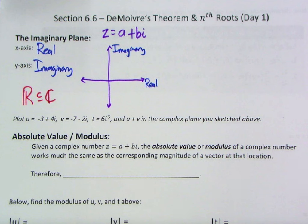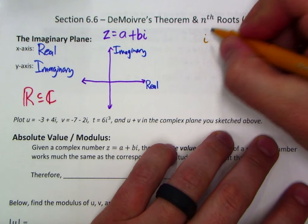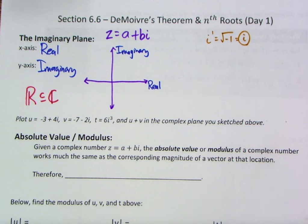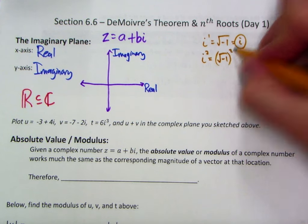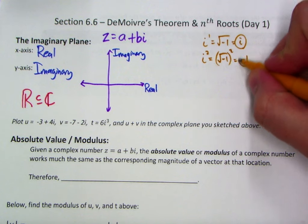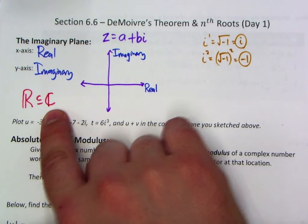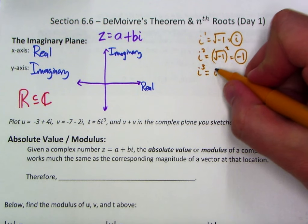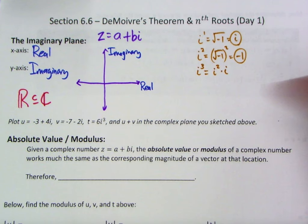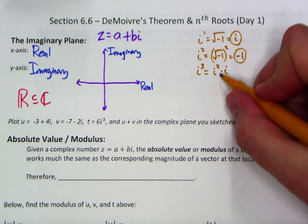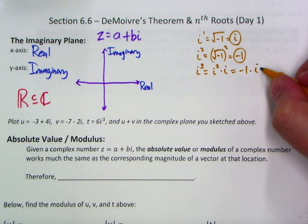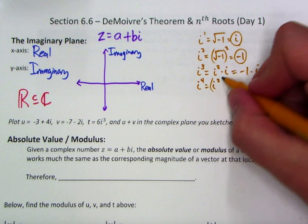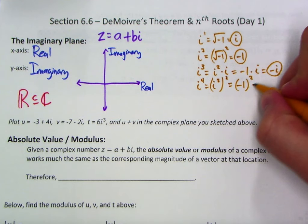Let's understand how i to various powers interacts. We know i to the first power is the square root of negative one — there's no other way to write it. If we square it, we get the square root of negative one squared, and since squaring and square roots are inverse operations, we get i² = −1. For i cubed, that's i² times i, and since i² = −1, we get −1 × i = −i. And i to the fourth is i² times i², which is (−1)² = 1.